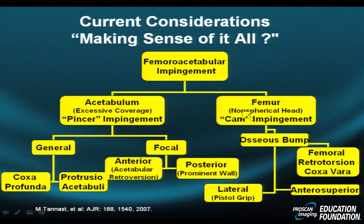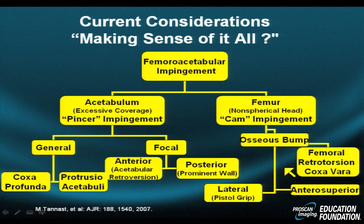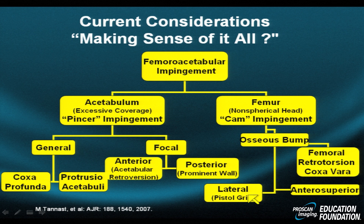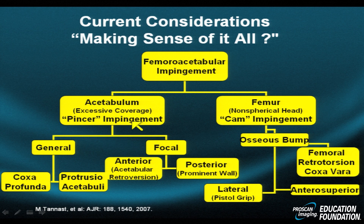In cam type impingement, there is loss of the sphericity of the femoral head as it transitions to the neck — in other words the neck is too wide or bumpy, causing the osseous bump. Associated descriptors include retrotorsion, coxa vara in which the hip is angled in at the level of the shaft, the pistol grip deformity, and anterosuperior preferential labral pathology, which is common with this constellation of findings.